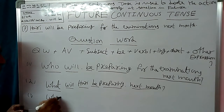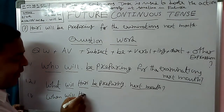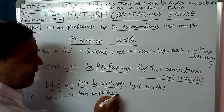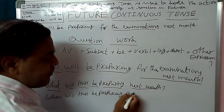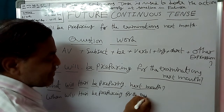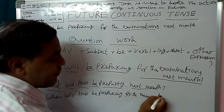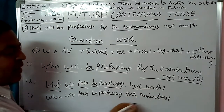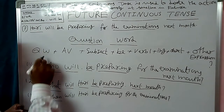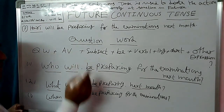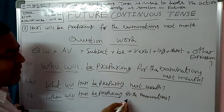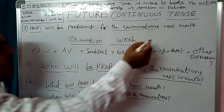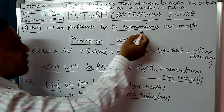When will Hari be preparing for the examinations? Structure: When (Question word) + Will (Auxiliary) + Hari (Subject) + Be + Preparing (Verb 1 + -ing) + for the examinations (Object). Answer: Next month. Hari will be preparing for the examinations next month.